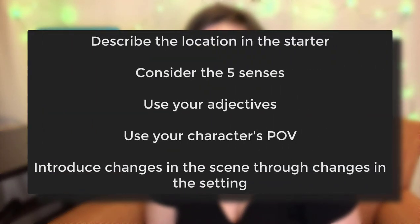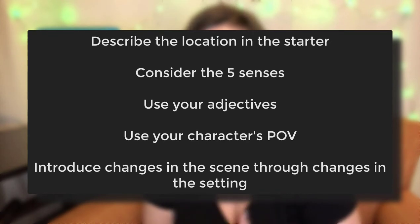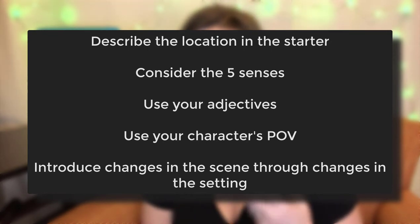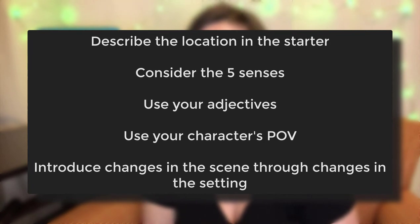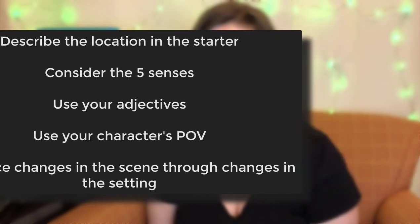So these are five of my tips for describing locations. To recap: first, describe the location in the starter. Then consider the five senses, not just how the scene looks. Make sure you use your adjectives, well placed to paint that picture. Don't forget to use your character's point of view when describing the location, and introduce changes in the scene through changes in the setting. Do you guys use any of these? If not, are you going to implement them? Are there additional tips that I didn't include that you think are important? Either way, let me know down below — I'd love to hear from you. And don't forget, as always, to make it a great day.